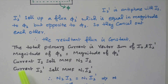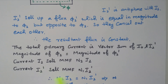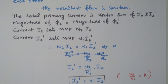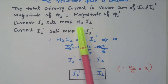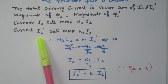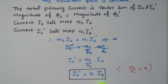The current I2 sets up MMF equal to N2·I2. The current I2' sets up MMF equal to N1·I2', because I2 flows through the secondary winding (N2 turns) and I2' flows through the primary winding (N1 turns). Both MMFs are equal, so N2·I2 = N1·I2'. By simplification, I2' = (N2/N1)·I2. Now, N2/N1 is the transformation ratio K, so I2' = K·I2.